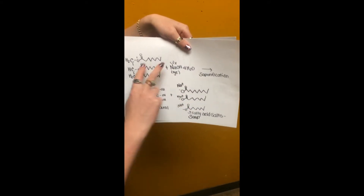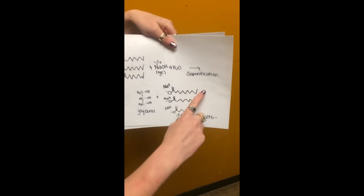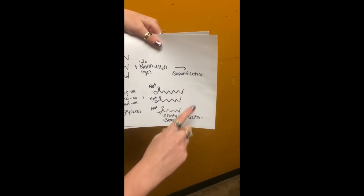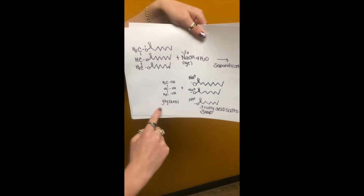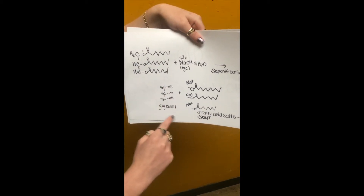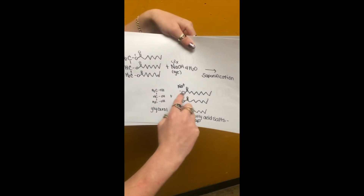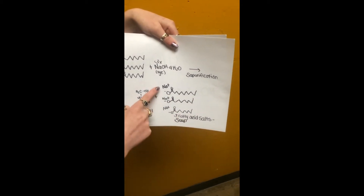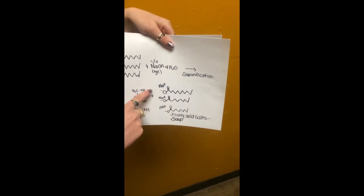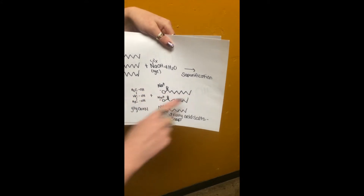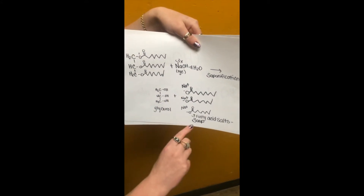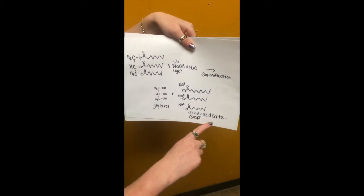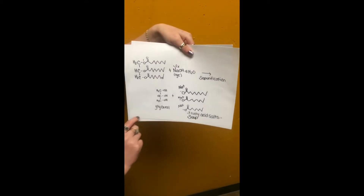And then when they're mixed together, this is called saponification. This is going to separate the glycerol backbone from the long-chain fatty acids, and the sodium is going to go with the long-chain fatty acids, producing three fatty acid salts, which is what we know as soap.